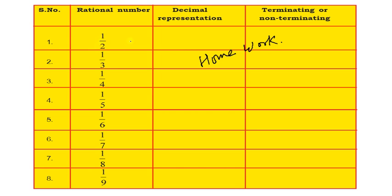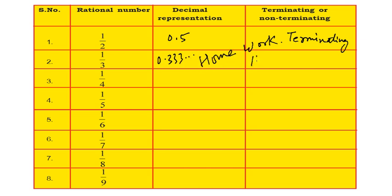Now look at the table, which is your homework. For 1 by 2: dividing gives 0.5 — it is terminating. For 1 upon 3: you get 0.333 and so on — that is non-terminating.